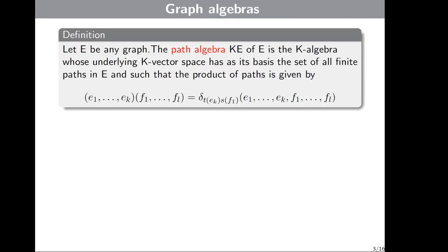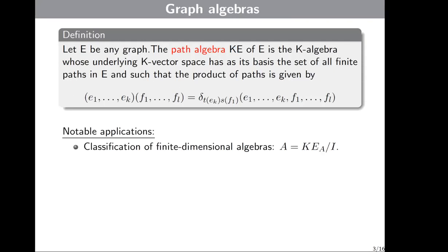Now we can come back to some applications. Firstly, graphs are used in the classification of finite-dimensional algebras. We know that every algebra A is isomorphic to a bound-quiver algebra, where the bound-quiver algebra is the path algebra KE_A divided by an admissible ideal.